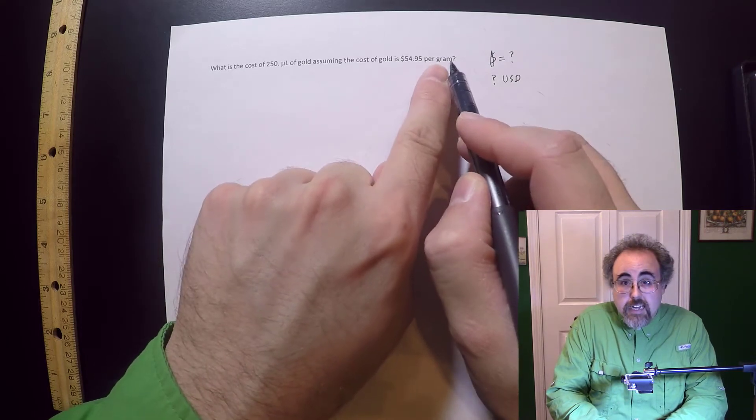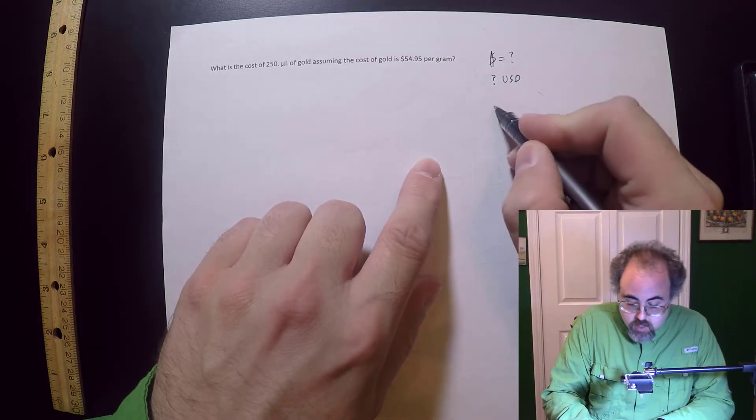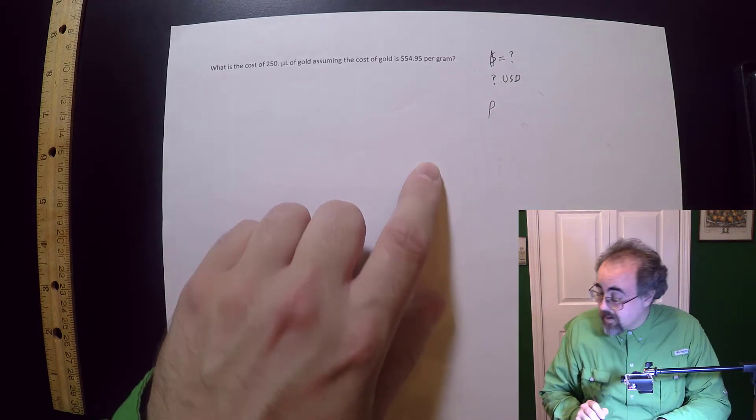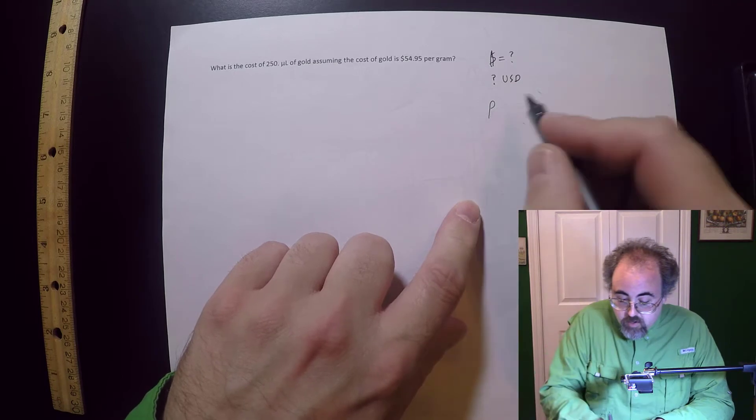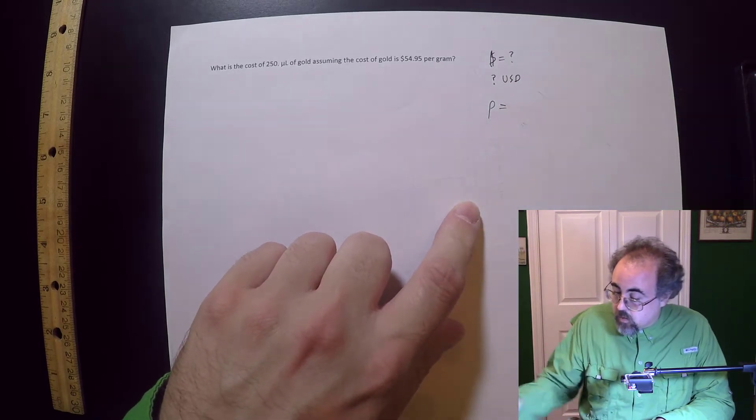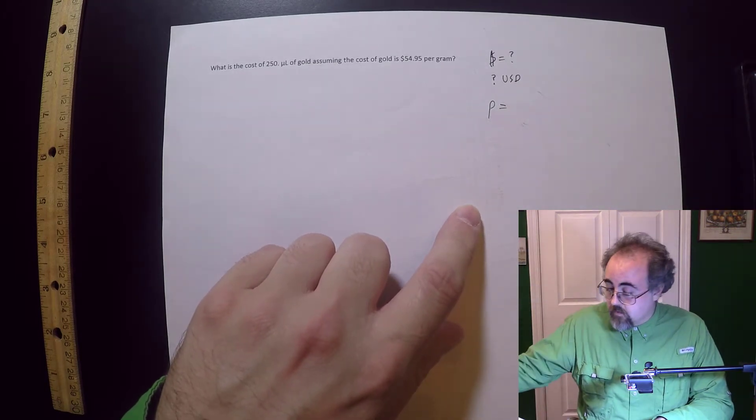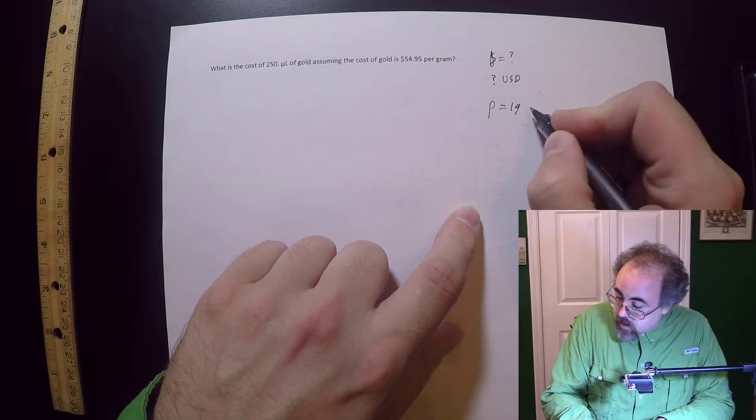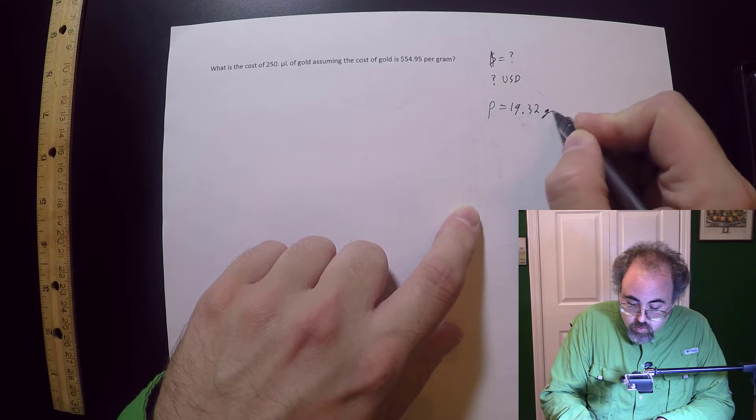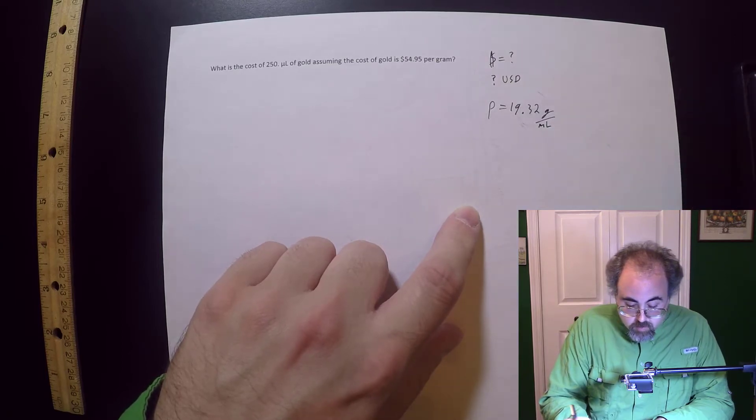So what I need is going to be density. So let's go for my rho. A little better than last time. I need that of gold. So gold, the density of gold according to the lab book I've got over here is 19.32 grams per milliliter.